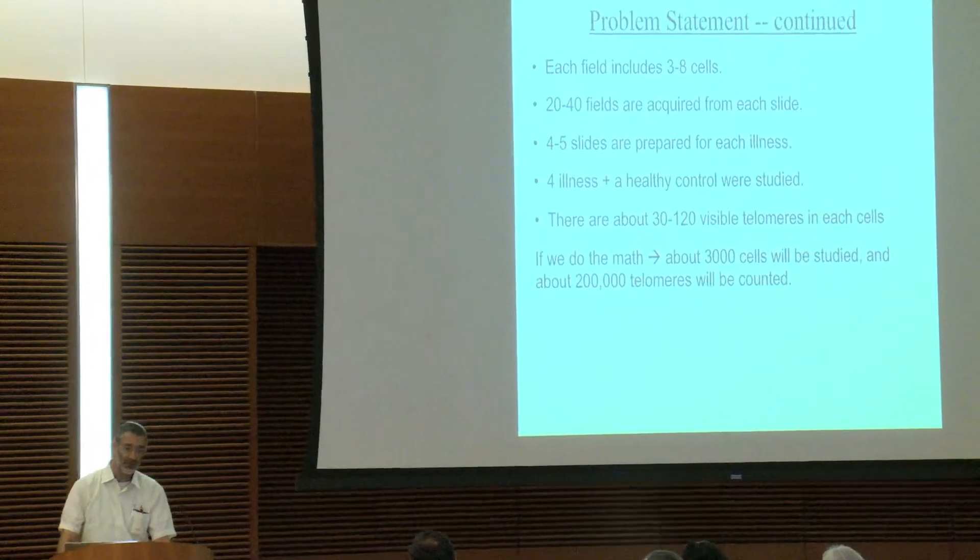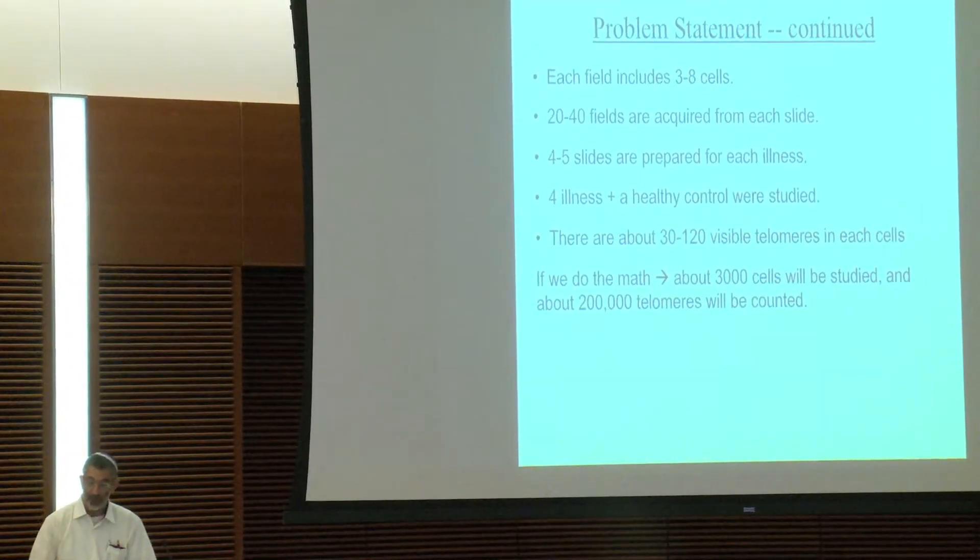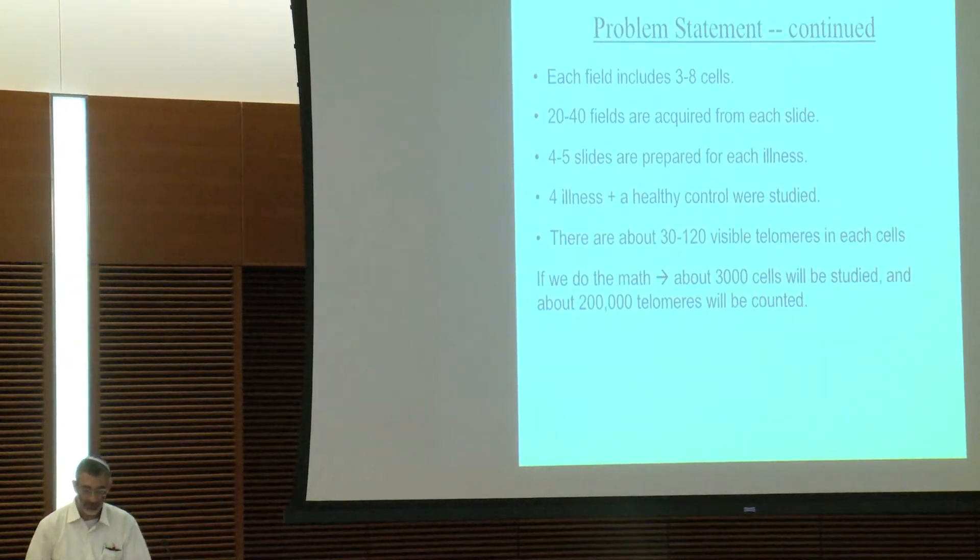Okay, so each field is three to eight cells. There are 20 to 40 fields from each slide, four to five slides for each illness, four illnesses, and a healthy control. When you do the math, we're studying about 3,000 cells and 200,000 telomeres. Just to give you an idea, there are 46 chromosomes, 92 telomeres, two ends of each one.